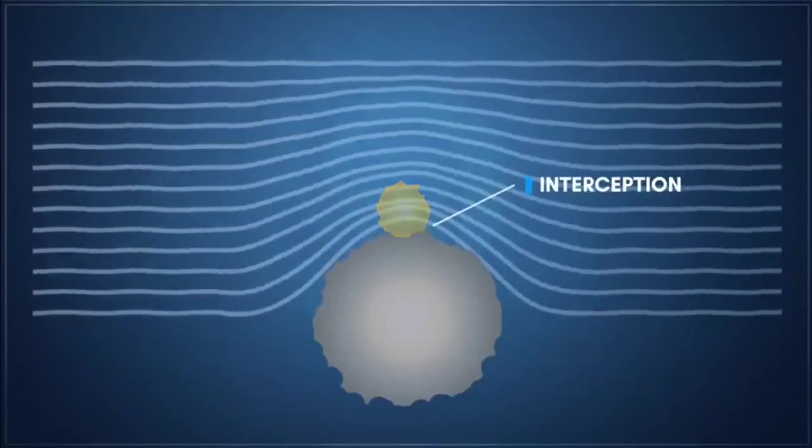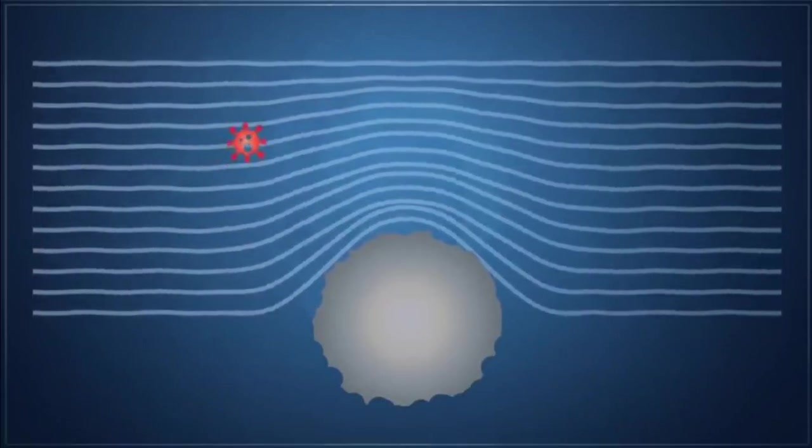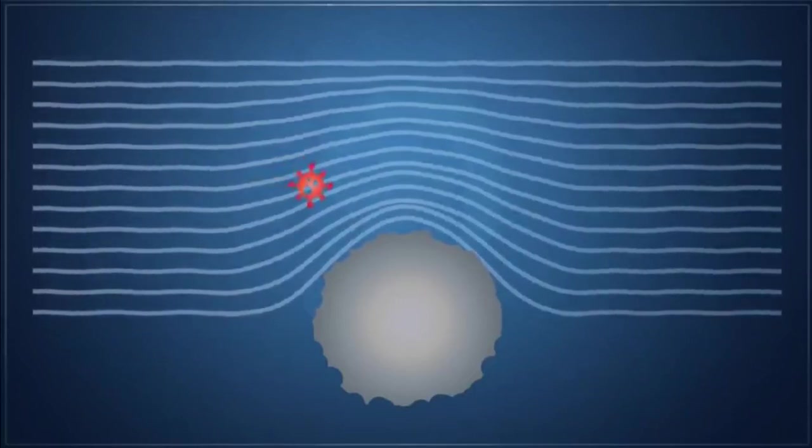In contrast, particles below 100 nanometers are mainly captured through a mechanism known as diffusion. Random movements of air molecules cause these very small particles to wander across the air stream due to Brownian motion. Because the path taken through the filter is drawn out, the probability of capture through inertial impact or interception increases dramatically, particularly at low airflow velocities.